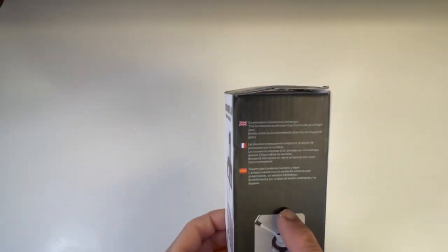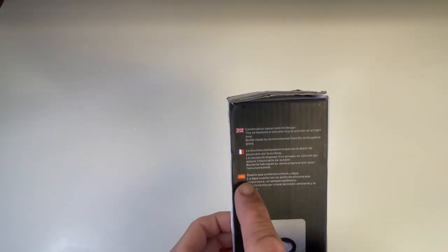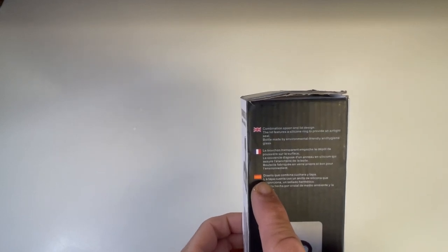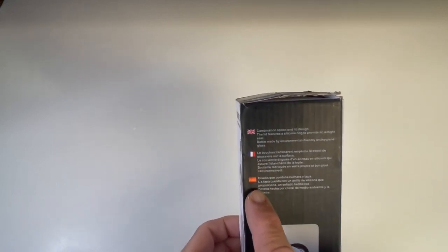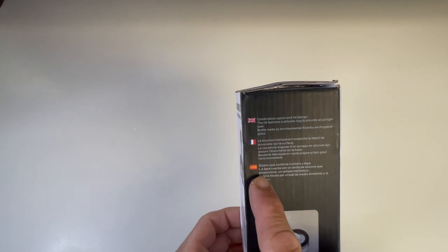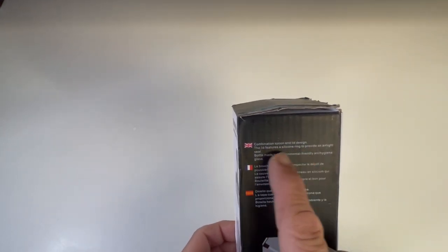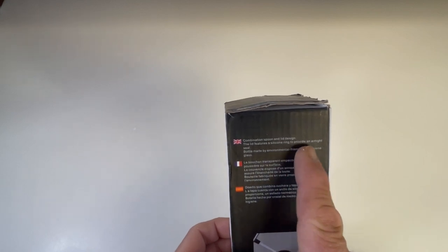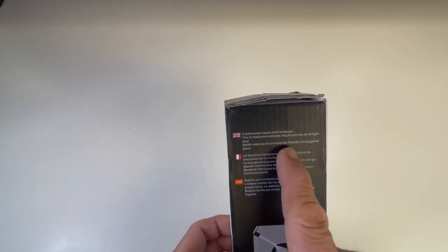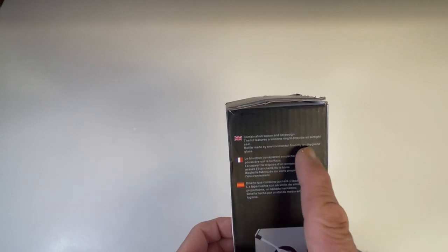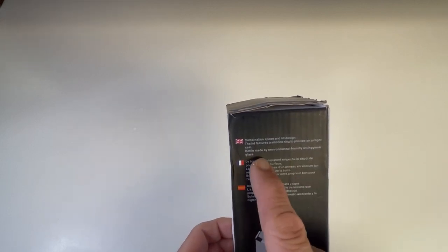Over here it shows a spoon. We'll read, we got the... I don't even know what that flag is. It must be Spanish of some sort. It looks like some French. Oh, okay. Combination spoon lid design. The lid features a silicone ring to provide an airtight seal bottle made by environmentally friendly and hygiene glass.